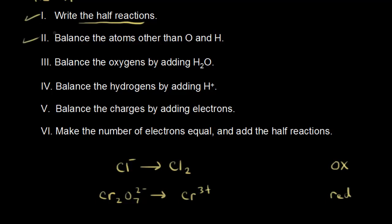Step two: balance the atoms other than oxygen and hydrogen. For the oxidation half reaction, we have one chlorine on the left and two chlorines on the right, so we put a 2 on the left. For the reduction half reaction, we have two chromiums on the left and only one on the right, so we put a 2 on the right. Step two is done.